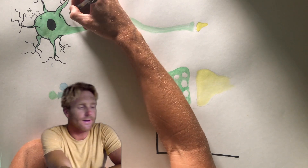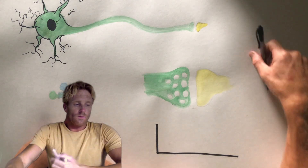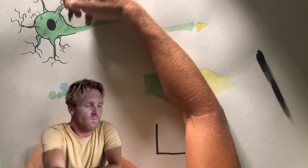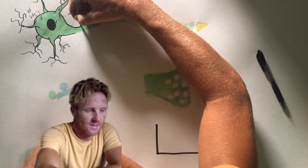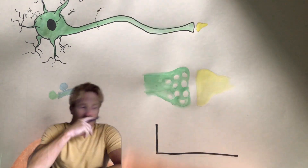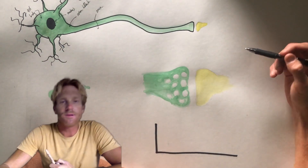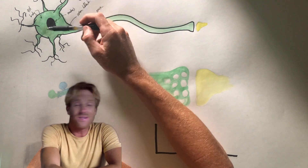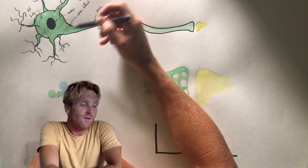Let me label the cell body here, and the nucleus is this large black structure right there. One part of the cell body forms a cone-like shape — almost like a funnel — which connects to a large tube that extends far away from the cell body. This large tube is called the axon, and the funnel that separates the axon from the cell body is called the axon hillock.